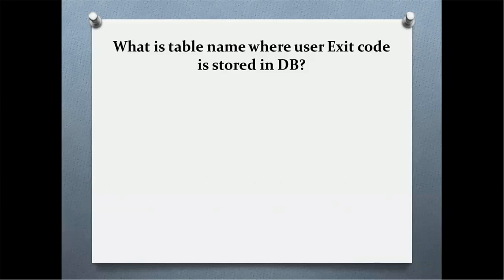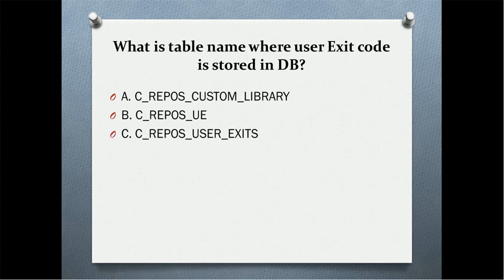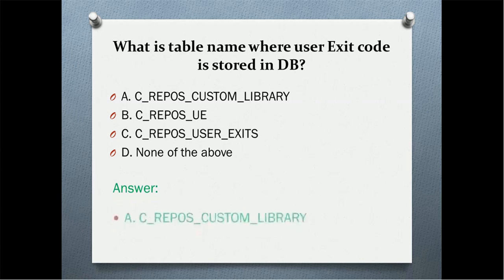What is the table name where user exit code is stored in the database? Some colleagues asked whether user exit code is stored anywhere besides the server. The answer is yes — it is also stored in the database. Options are: C_REPOS_CUSTOM_LIBRARY; C_REPOS_UE; C_REPOS_USER_EXITS; none of the above. The correct answer is C_REPOS_CUSTOM_LIBRARY.